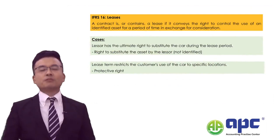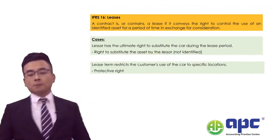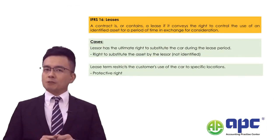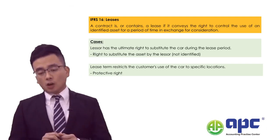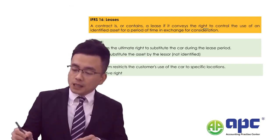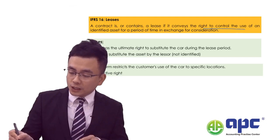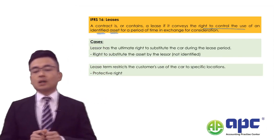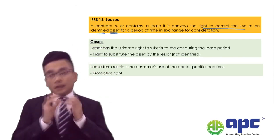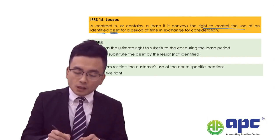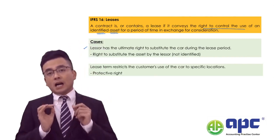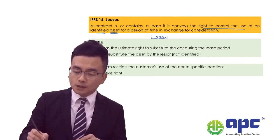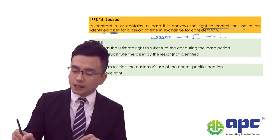Another example is related to leases — how to define a lease transaction. This is a contract where we have the right to control the identified asset. Instead of buying the asset, I'm leasing it, which means the lessor leases the asset to the lessee.